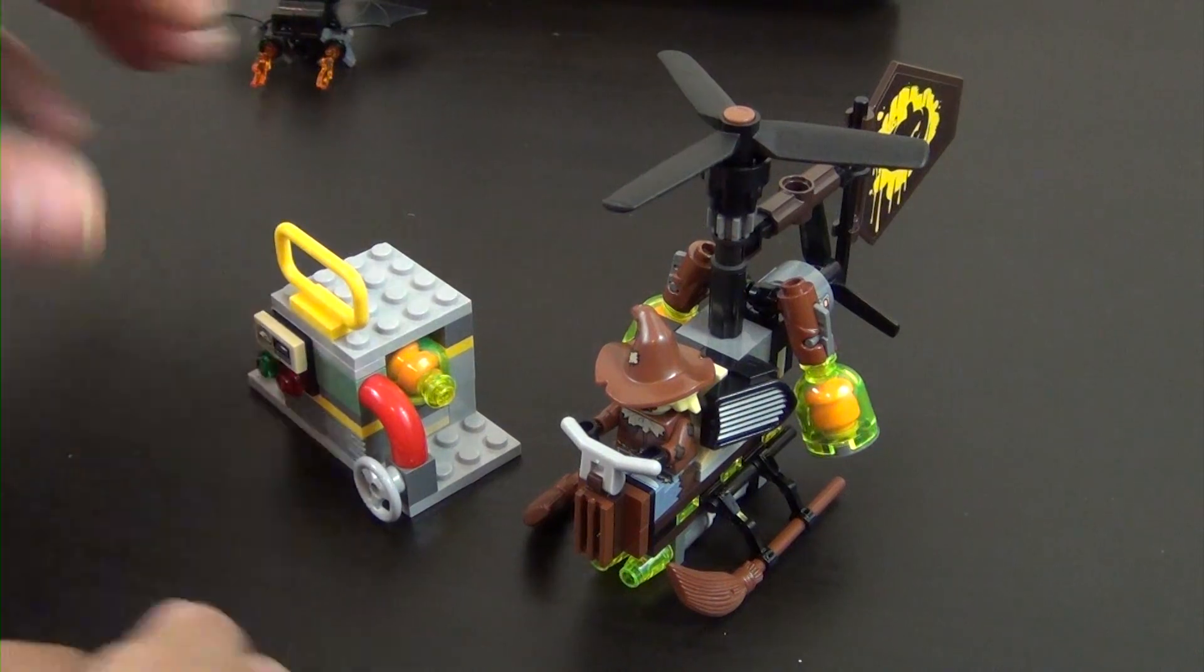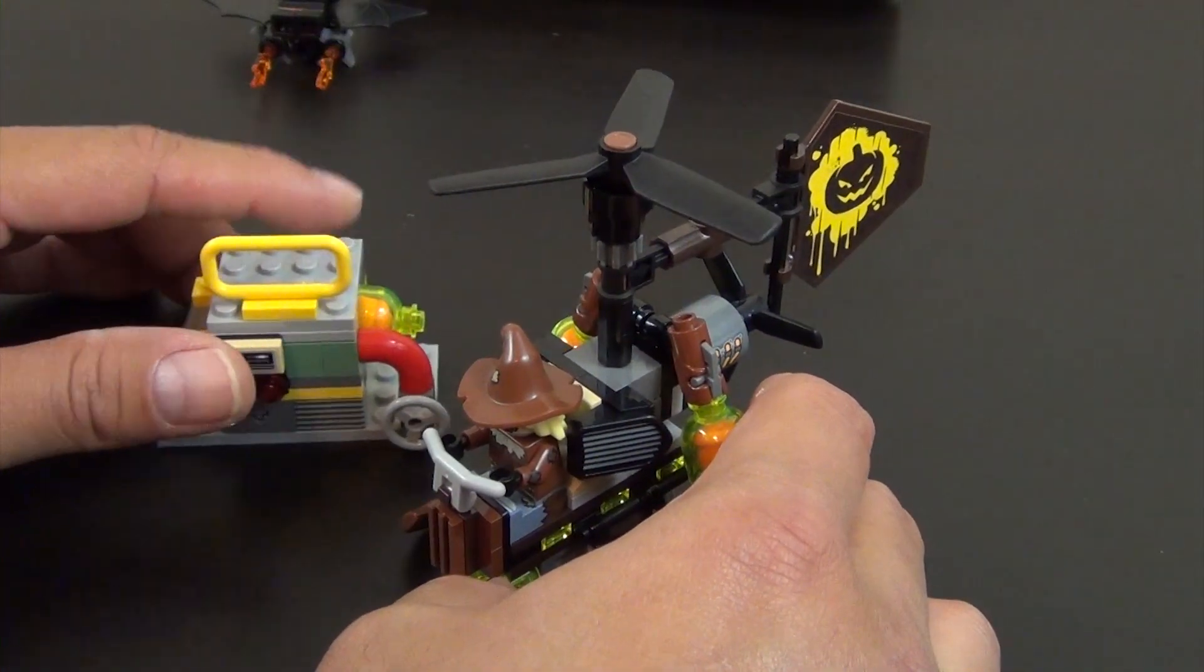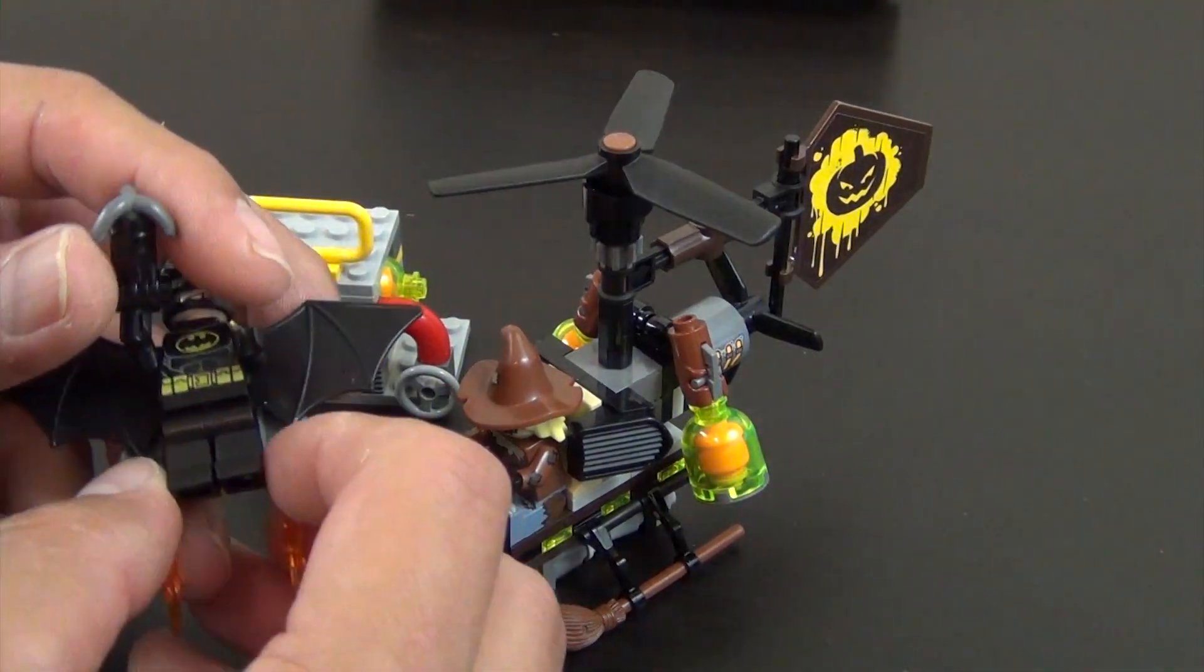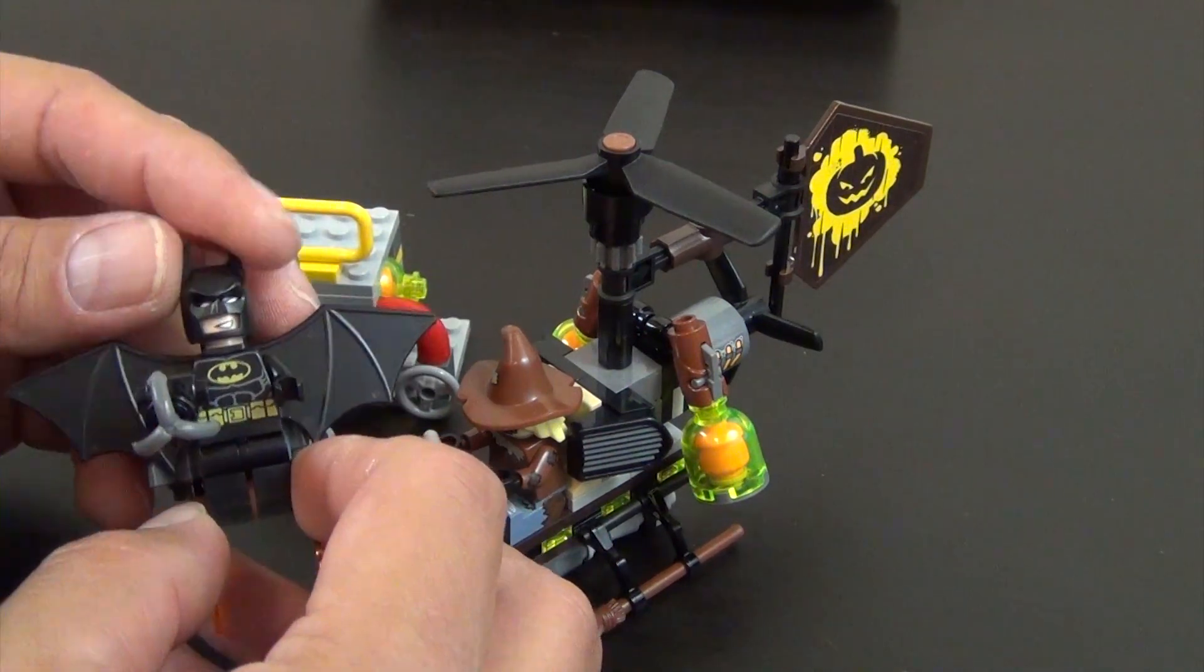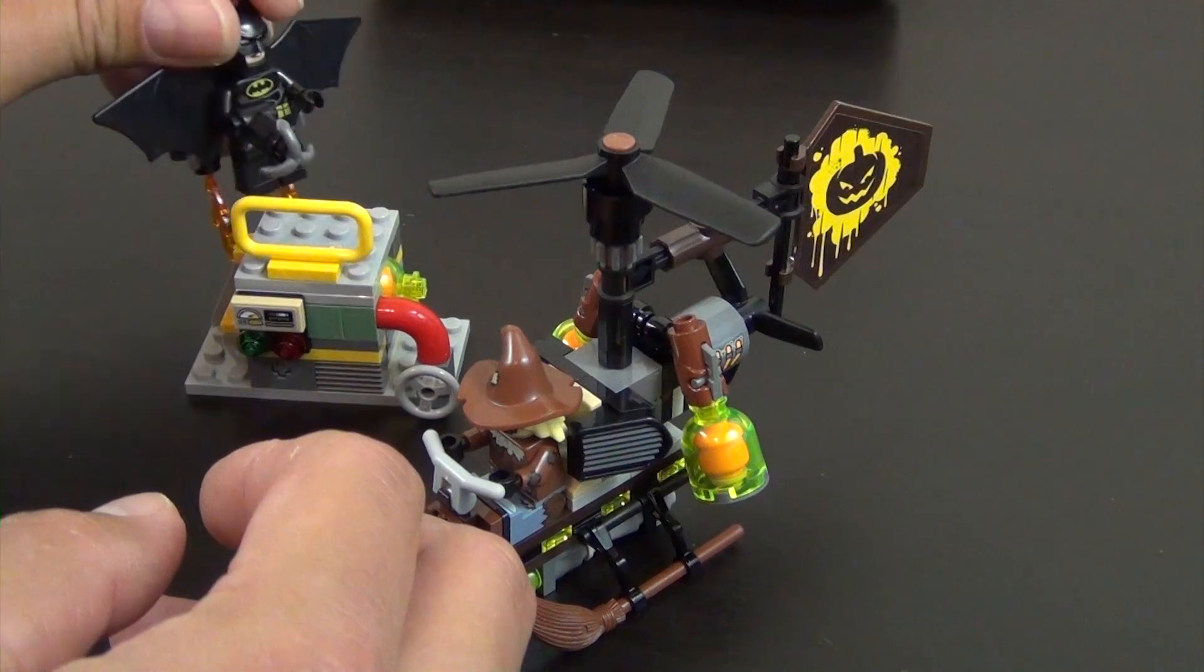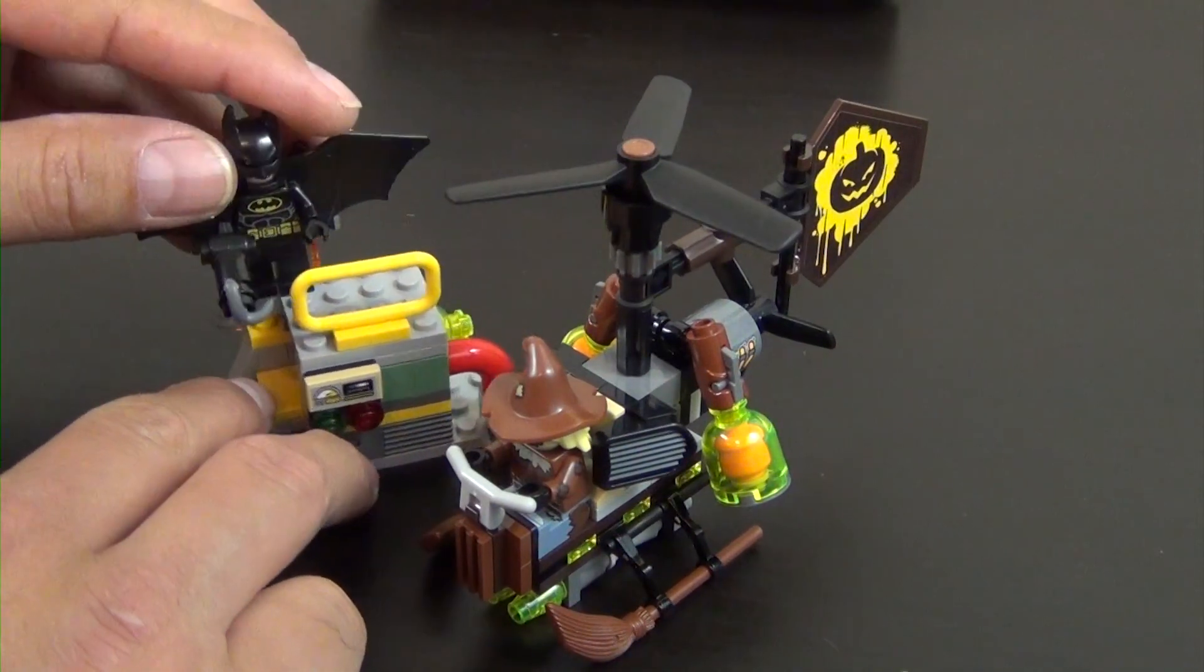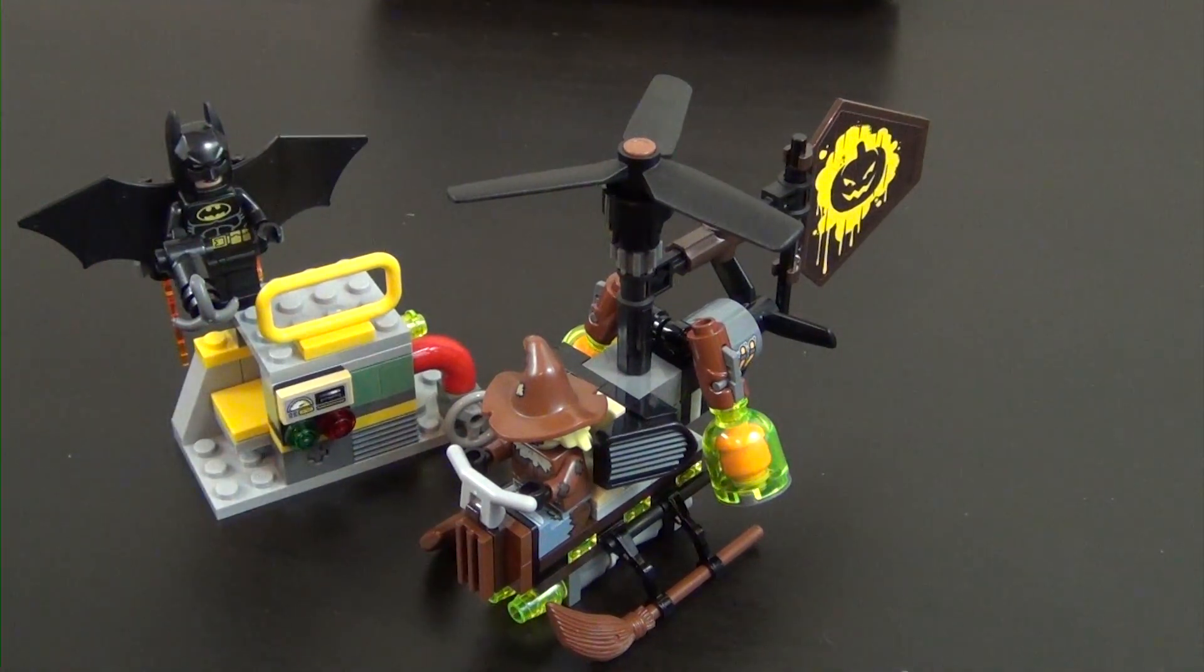So we have our extra pieces and slide those off to the side. So we have Scarecrow, we have this little bomb that he's placed, and then we have Flying Batman that is trying to capture Scarecrow. So Flying Batman is hard to—I'm going to put him up here that way his stuff can hang down, because he won't stand up with that backpack and everything that's on him.